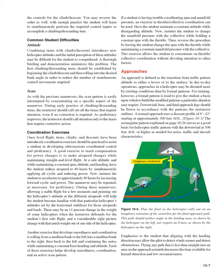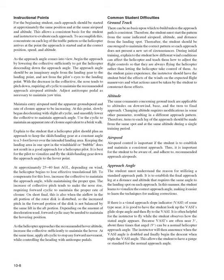Flying any path that is less than straight into an area on the approach azimuth decreases the time available for hazard detection and low reconnaissance. For the beginning student, each approach should be started at approximately the same position and at the same airspeed and altitude — this allows a consistent basis for evaluation. Concentrate on each leg of the traffic pattern so the helicopter arrives at the point where the approach starts at the correct position, speed, and altitude. As the approach angle comes into view, begin the approach by lowering the collective sufficiently to get the helicopter descending down the approach angle.